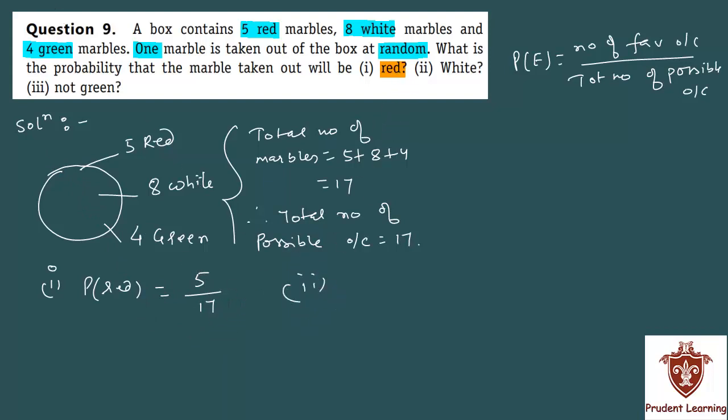For white marbles, 8, which is total number of white marbles, 8 over total number of possible outcomes still remaining same, 17. So, second section of answer is 8 upon 17.